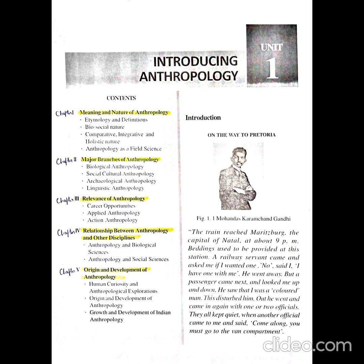In this first chapter, Meaning and Nature of Anthropology, in the very first two pages, the description of the bitter experience of Mahatma Gandhi based on colour discrimination is given. He was not allowed to travel in a first-class train compartment despite having a ticket. This discrimination clearly explains the existence of differences in various forms, whether in thought process, behaviour, or culture in human life.